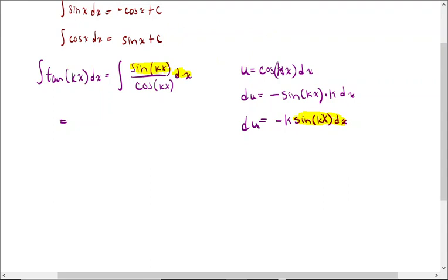So the only other thing that I need to accommodate for is this negative k. So we'll divide that negative k. So it would be negative 1 over k du what I substitute in for sine(kx)dx.